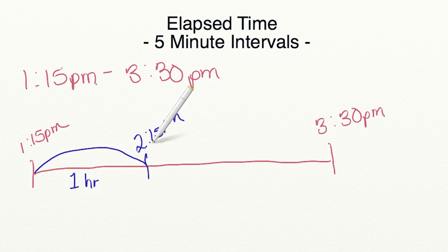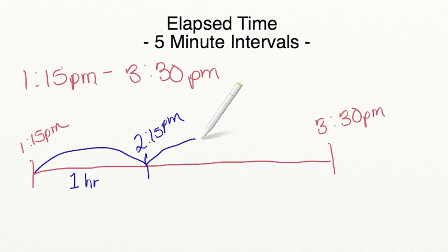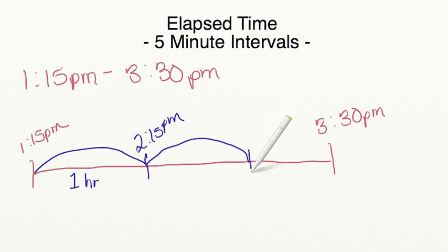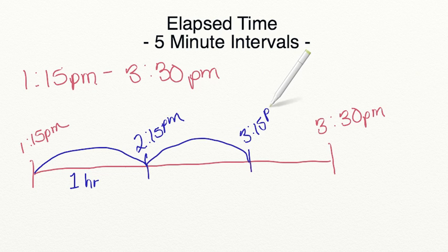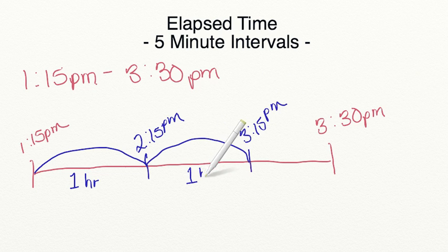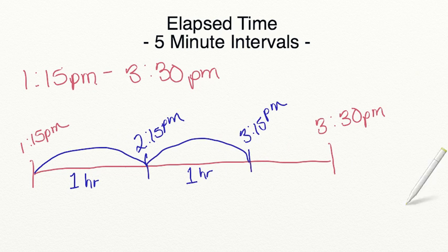Now I'm going to move from 2:15 to 3:15 PM, which is one more hour. I'll label 3:15 PM on the number line and mark that I've moved one more hour. It's important that you're labeling this correctly because we're going to be adding these up at the end.